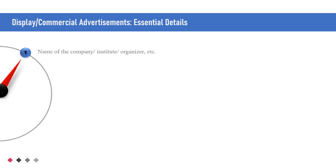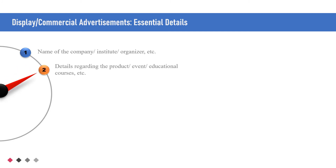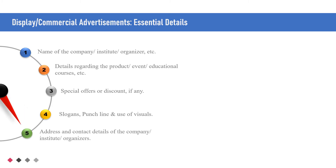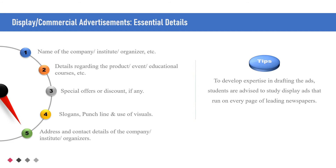Essential details to be included while drafting any commercial or display advertisement: name of the company, institute, organizer, etc.; details regarding the product, event, educational courses, etc.; special offers or discounts if any; slogans, punchlines and use of visuals; and finally, address and contact details of the company, institute or organizers. Tip: To develop expertise in drafting advertisements, students are advised to study display advertisements that run on every page of leading newspapers.